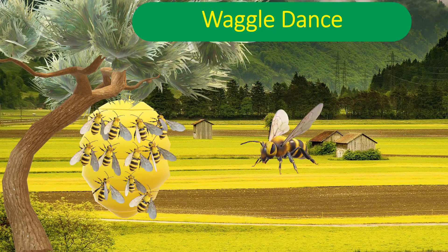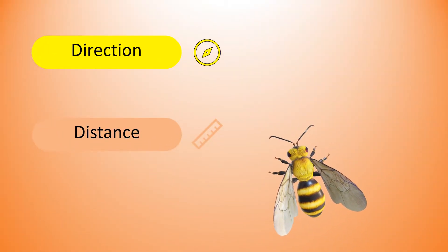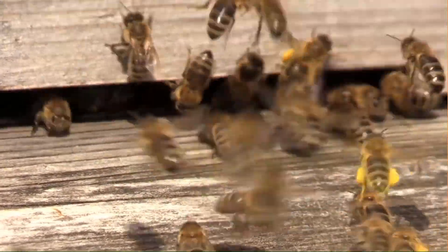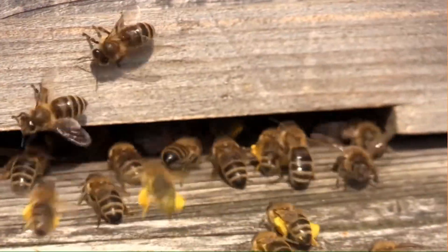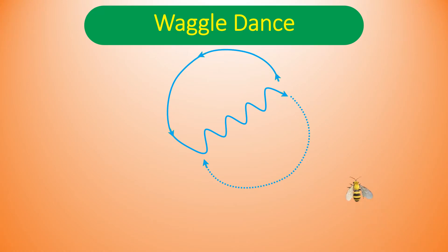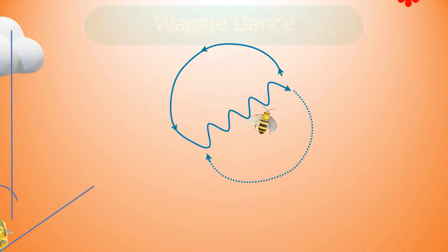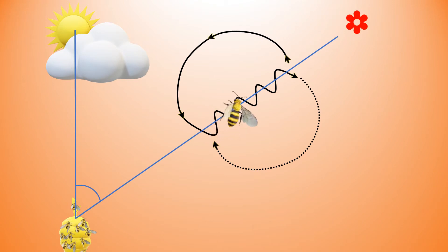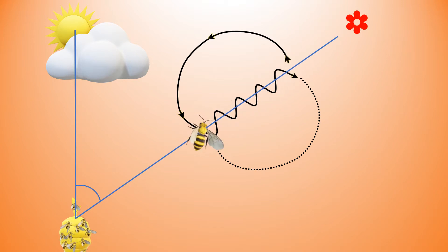Waggle dance. When the food source is far away from our hive, we perform this type of dance to communicate information about the direction and distance to collect our food items. When we return to the hive, we perform the waggle dance, in which we run along semicircles alternatively left and right, ending each with a straight run back to our starting point. During the straight run, we perform a rapid waggling movement of our abdomen.